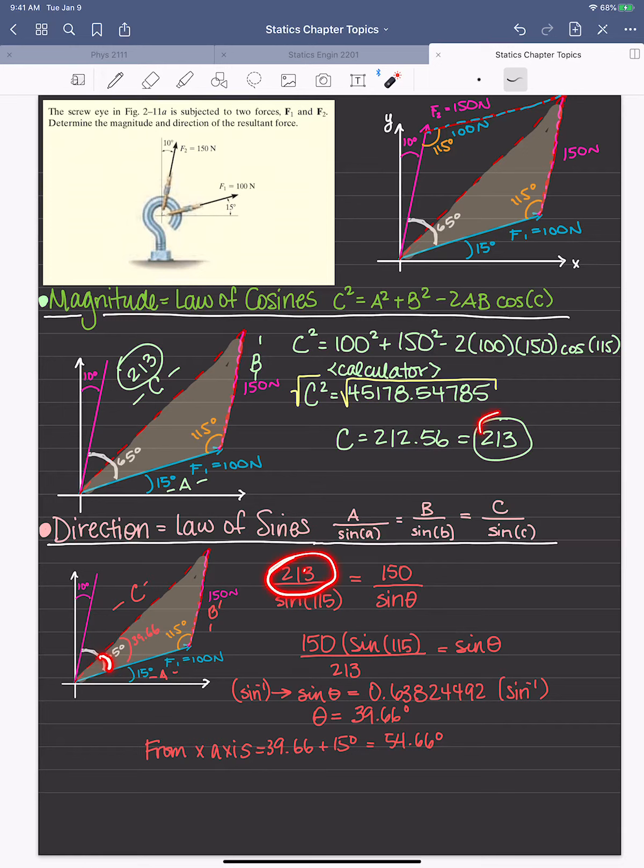So we have our c that we solved for. We know that that's 115, so that's a given. And then we're going to take this leg here and we want to solve for what this angle will be.